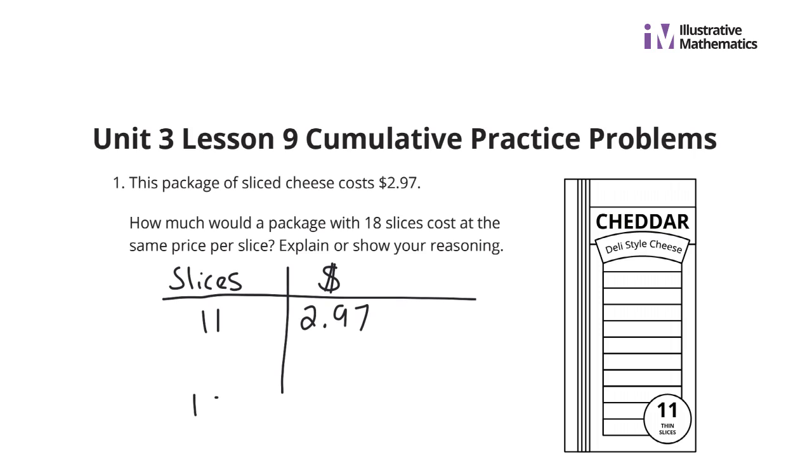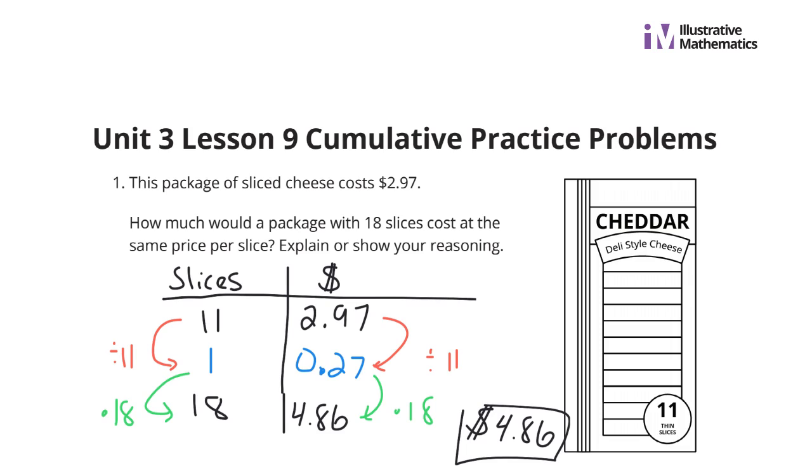So 11 slices is $2.97. We are trying to get to 18 slices of cheese. And so if we use a unit rate now to get to one slice of cheese, we would take 11 and divide by 11 to get to one slice of cheese. If we take the $2.97 and divide that by 11, we would end up with $0.27. So one slice of cheese costs $0.27. At the same price per slice, we can multiply by 18 here. And $0.27 per slice times 18 slices is $4.86. So $4.86 is our solution for a package with 18 slices of cheese.